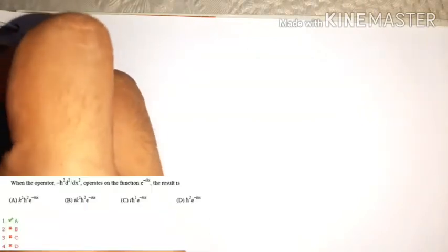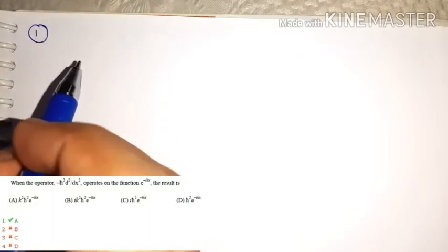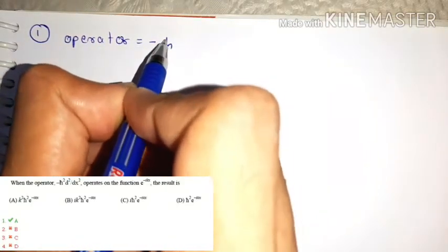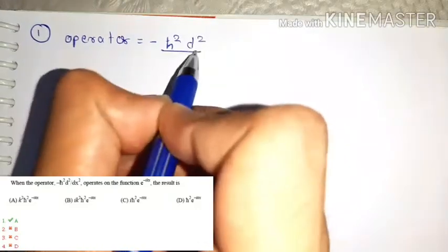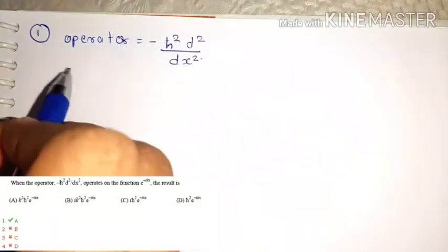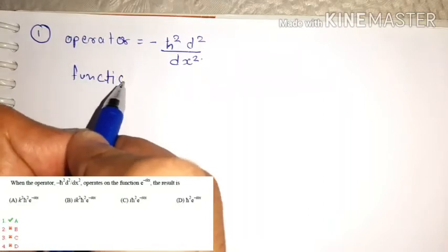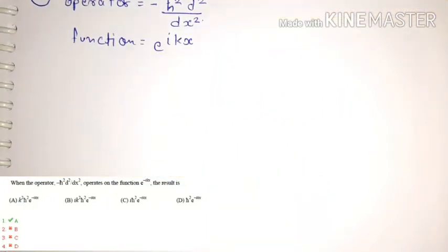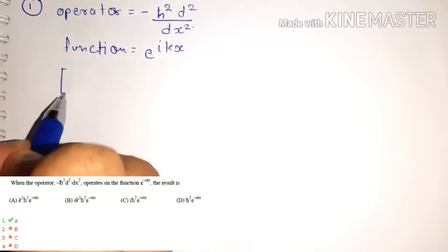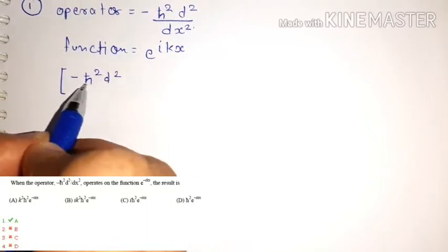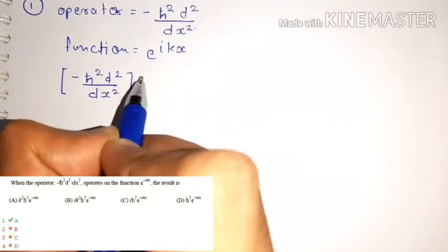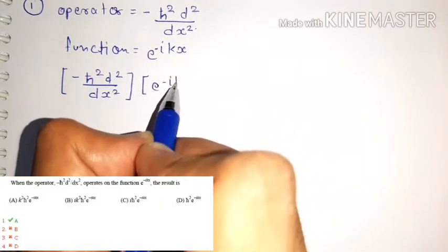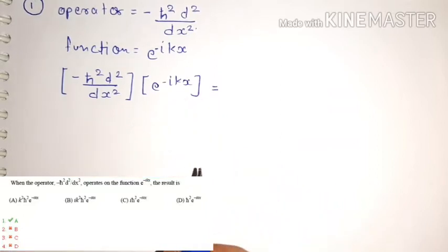So, the operator given is minus ℏ² d²/dx², and the function given is e to the power minus ikx. So what we need to do is solve: minus ℏ² d²/dx² acting on e^(-ikx). We need to find the value of this.